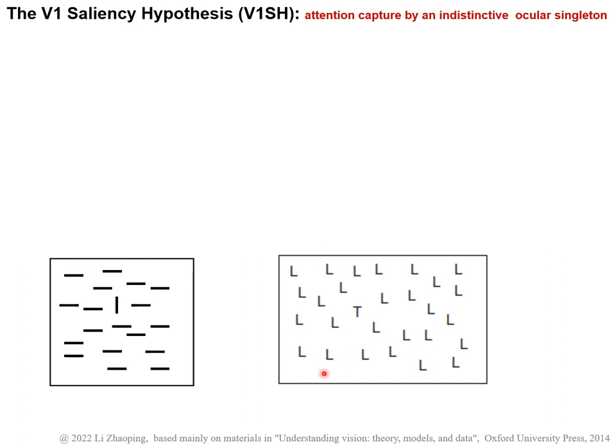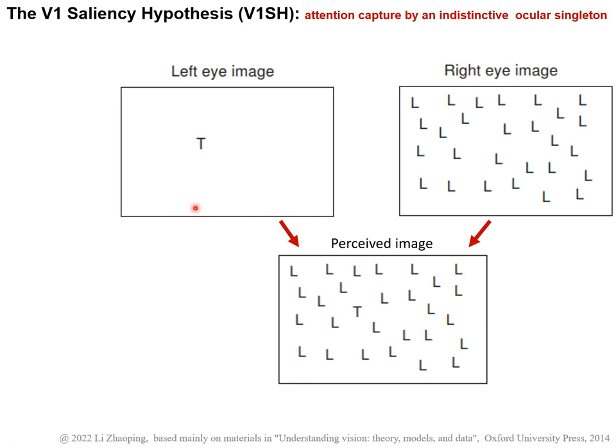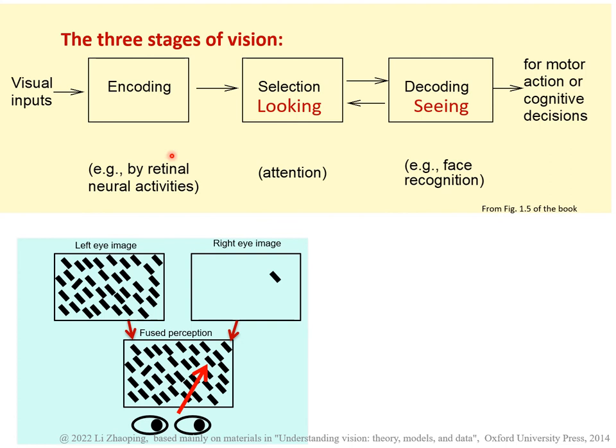We can help make such a search easier by putting the letter T in a different eye. In our framework of the three stages of vision — encoding, selection, and decoding — attentional selection is before recognition. The attentional selection evoked here by the ocular singleton, without perceiving or recognizing the eye-of-origin feature, is an example of looking without seeing. Therefore, it's easy to imagine that looking can occur before seeing.